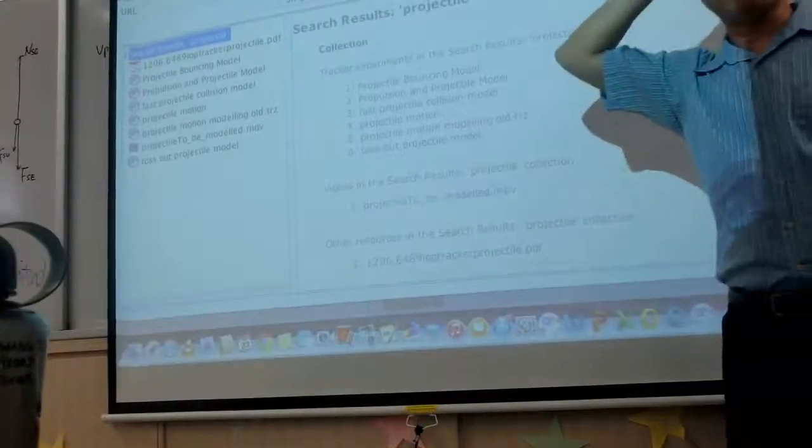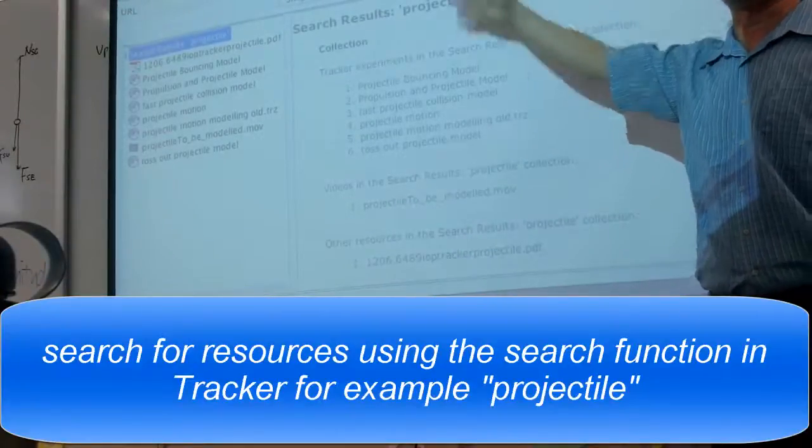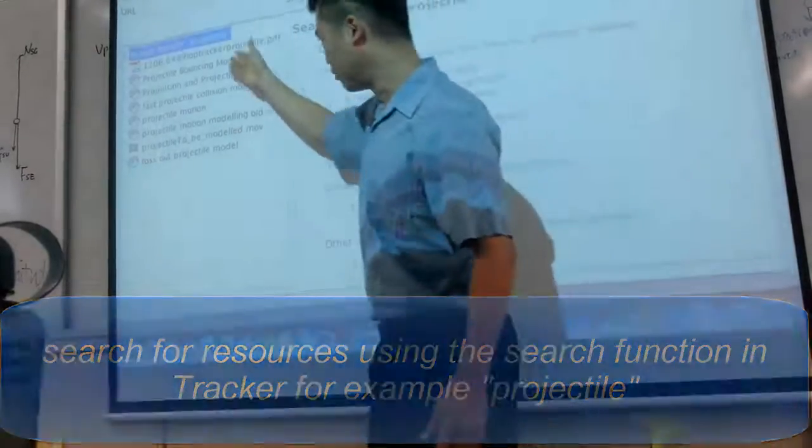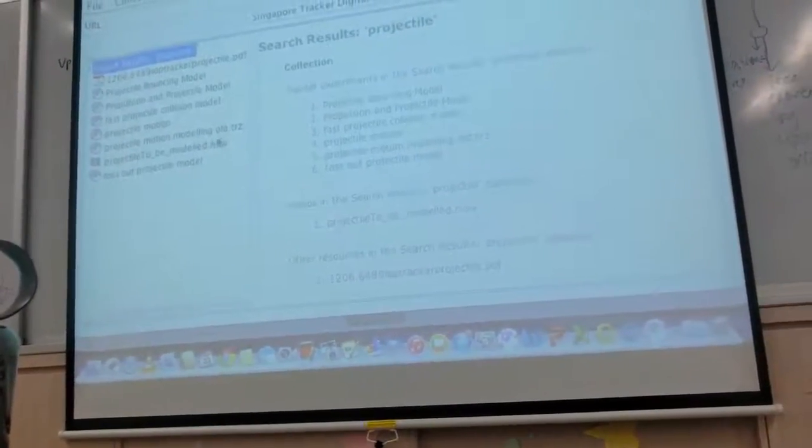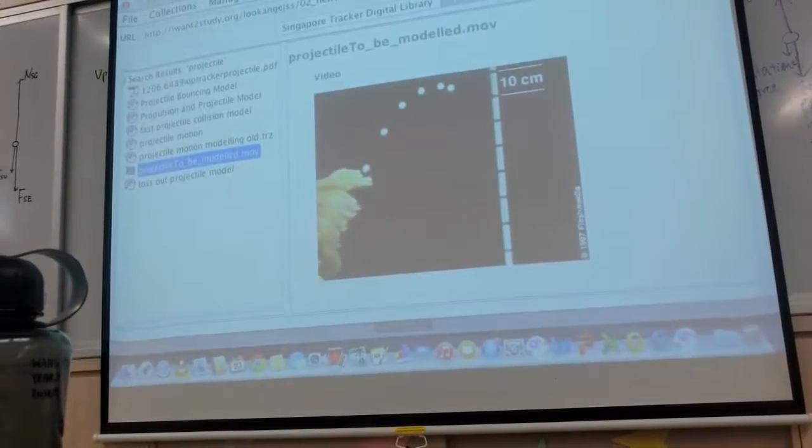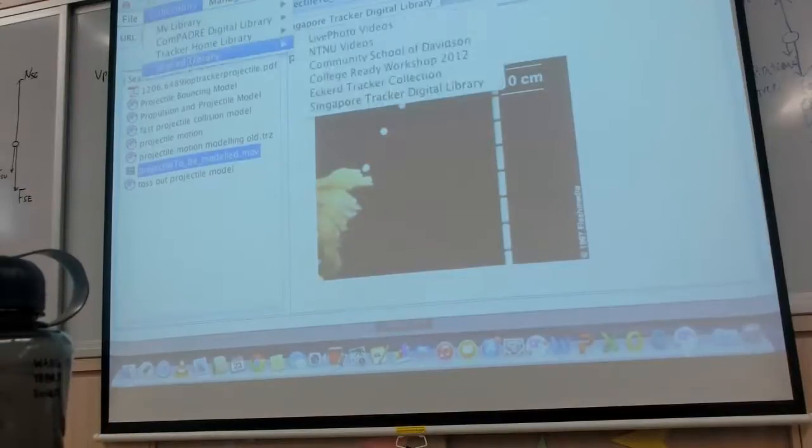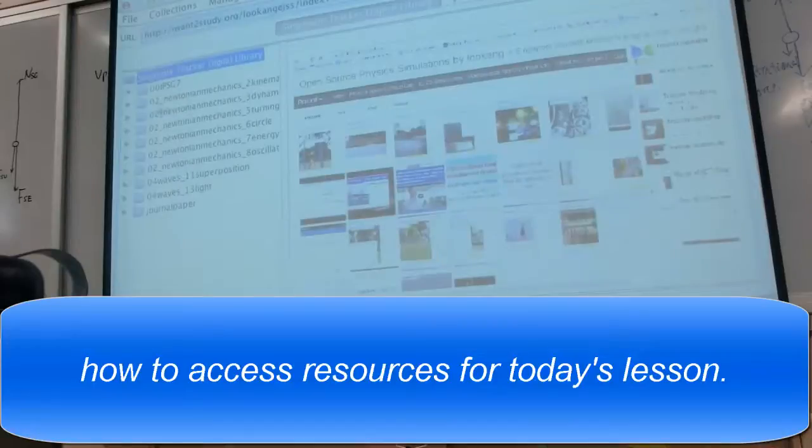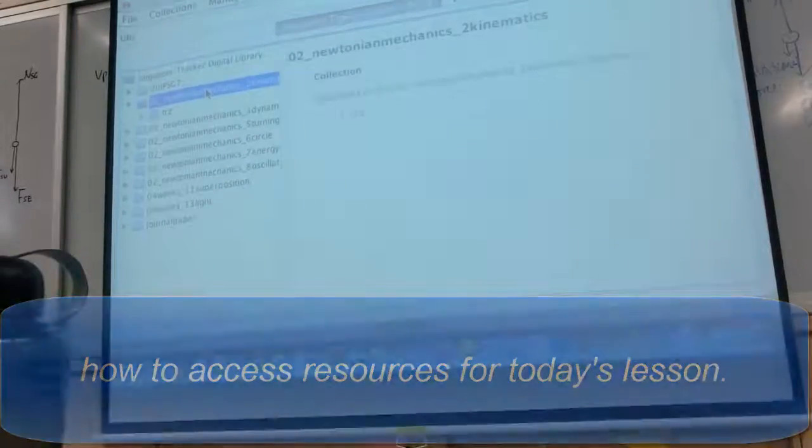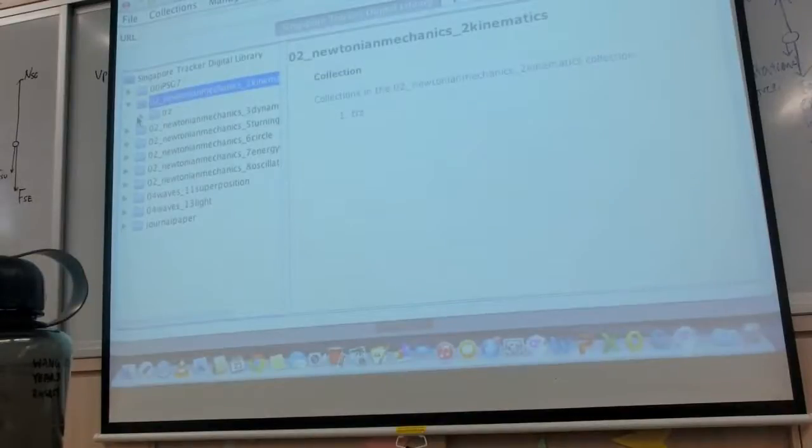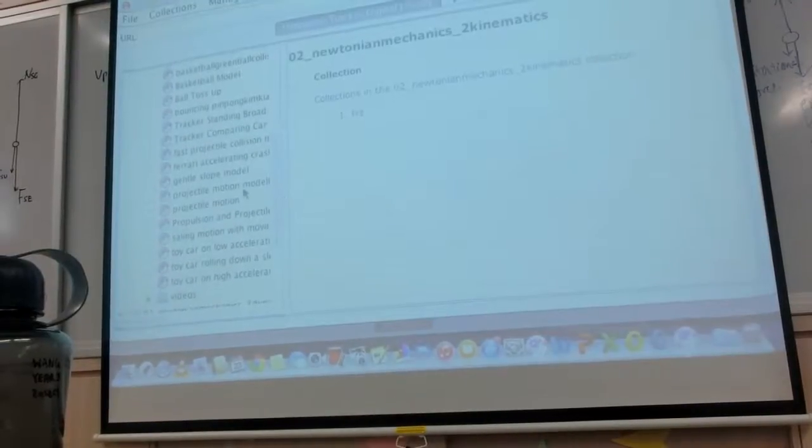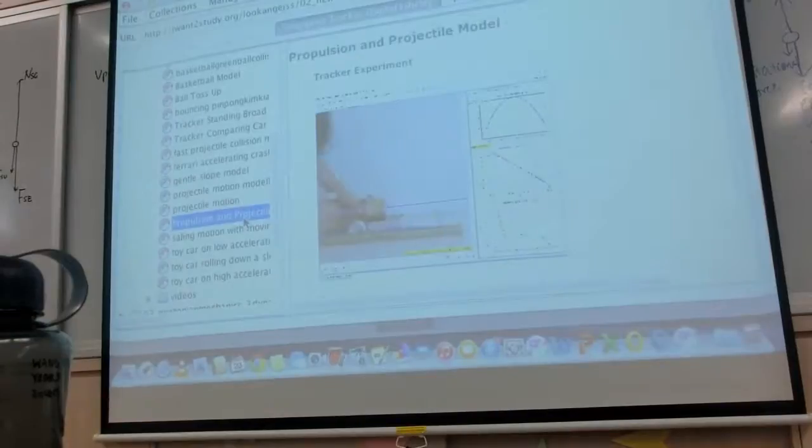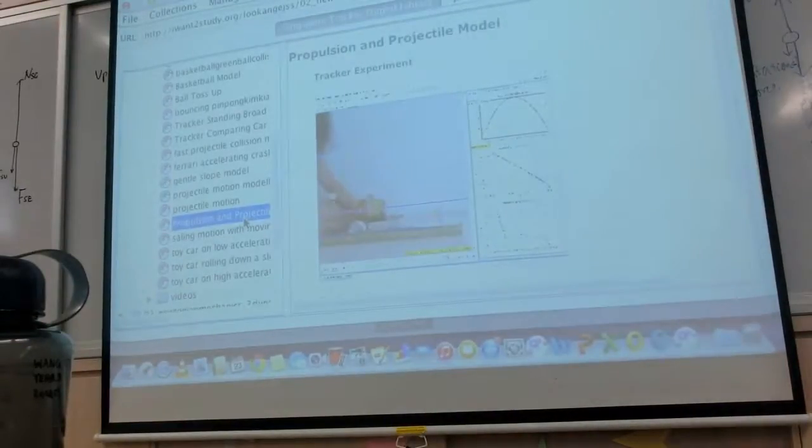So, when you key the word projectile inside the Tracker shared library interface, you should come across certain videos and resources that could be useful in this lesson. Unfortunately, this is not a video that I want to talk about. So, I want you to do this instead. Can you go to collection again? Can you navigate to Kinematics? In the folder TRZ? Navigate down. I want to use an example. I have some thoughts about this. I want to use an example of your senior last year. Her name is Victoria.